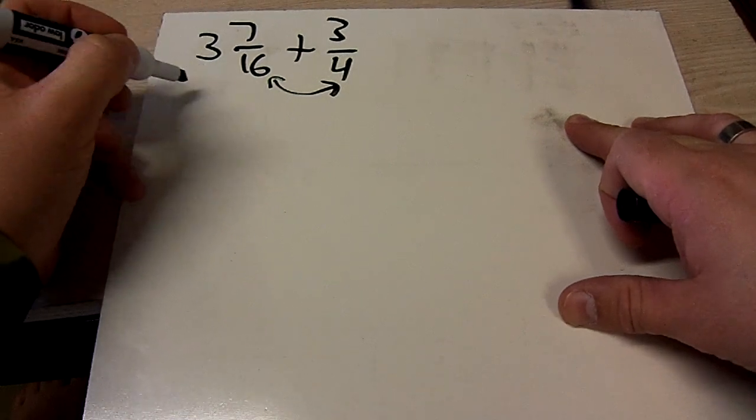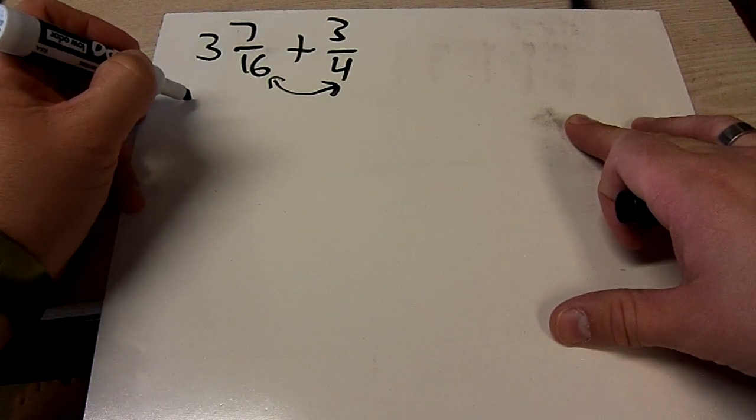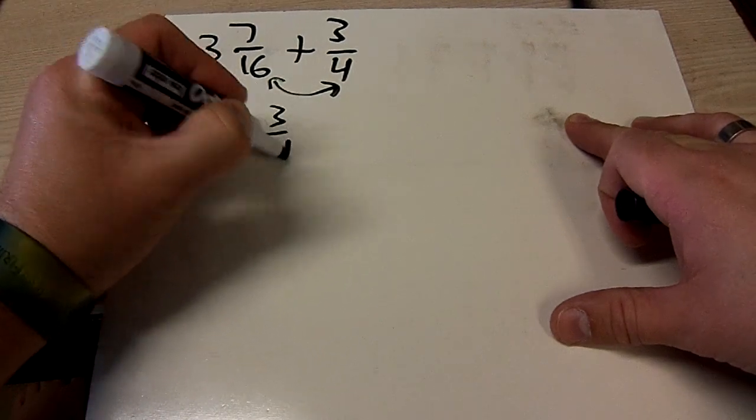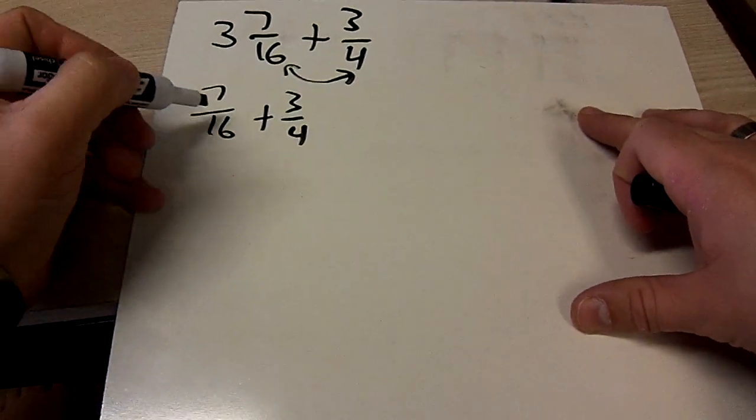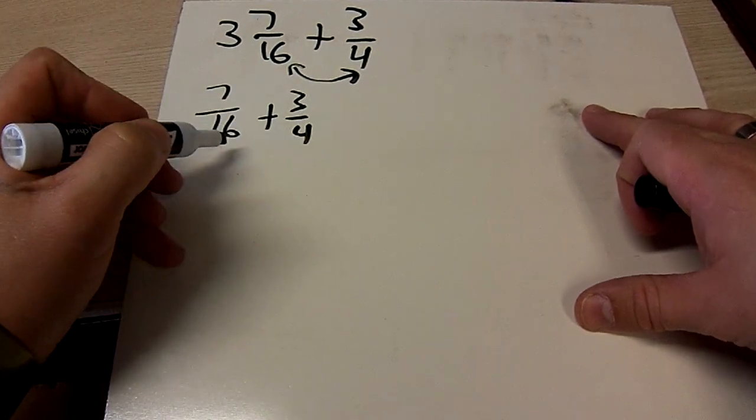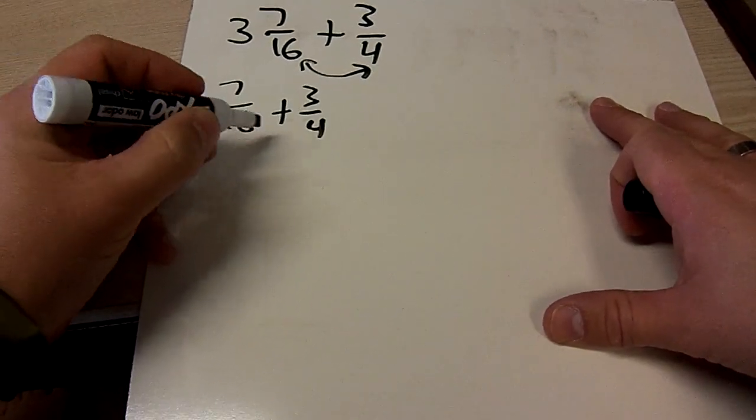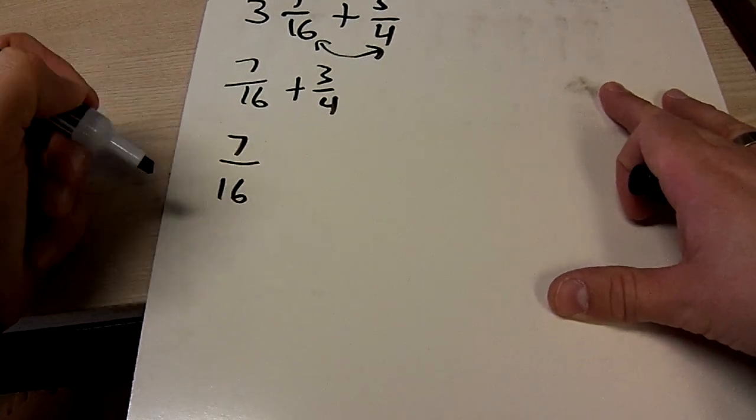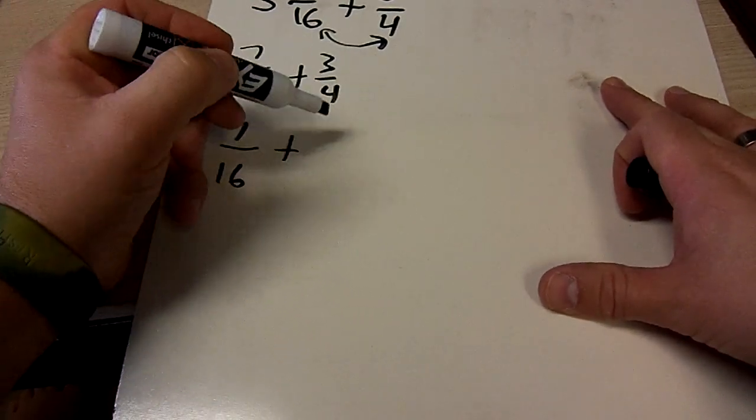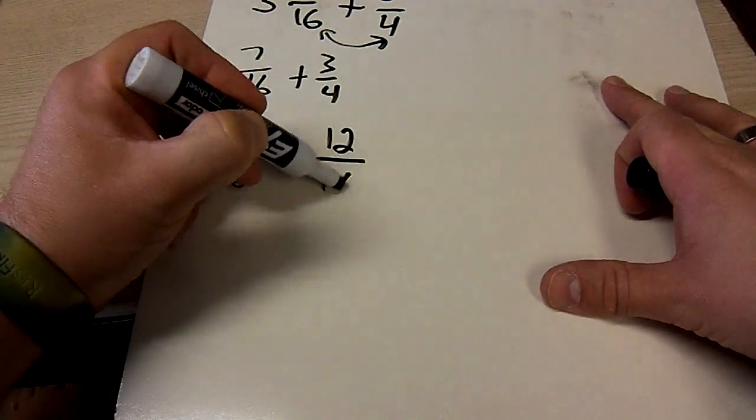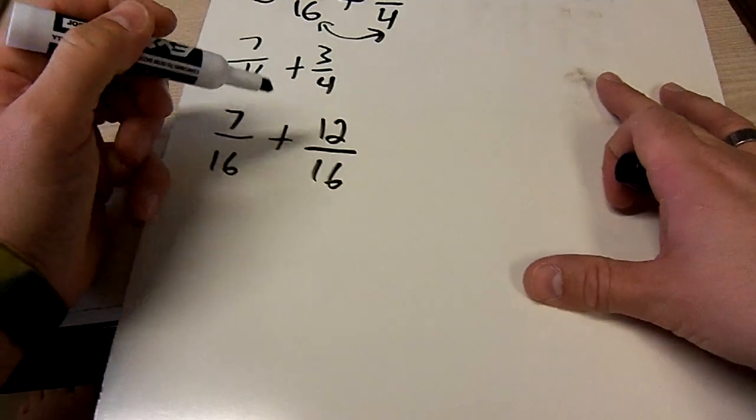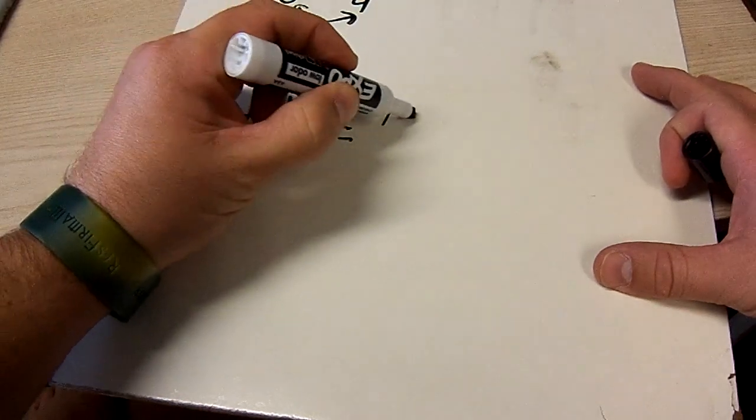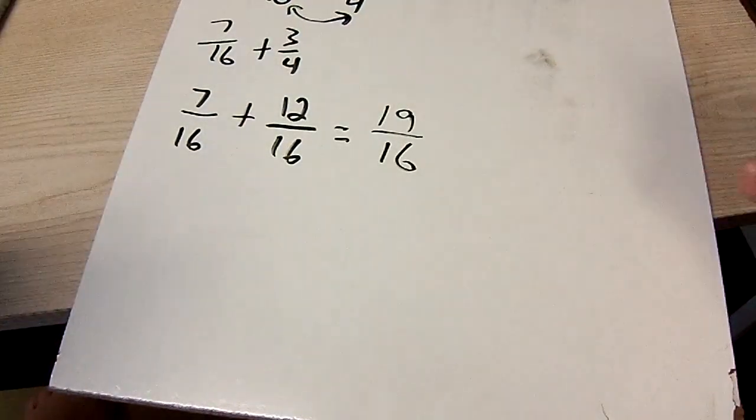So let's just forget about the 3 for right now, and let's focus on the 7 sixteenths and the 3 quarters. Now to add these together, again they have to have the same denominator. So we'll change this one up to 16 and leave this one exactly where it is. So 7 sixteenths plus 12 sixteenths, add that together, and we get 19 sixteenths.